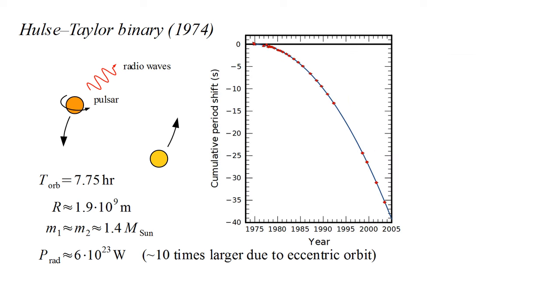In this figure, the blue curve shows a cumulative shift in the orbital period due to gravitational wave radiation, as predicted by general relativity. The red dots are observed values. The agreement between theory and observation is excellent.